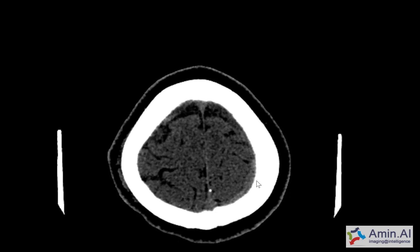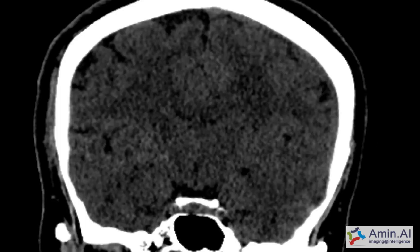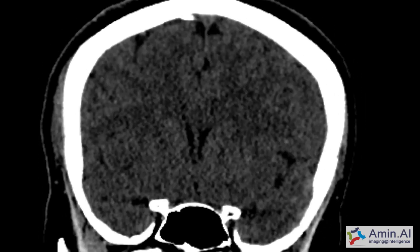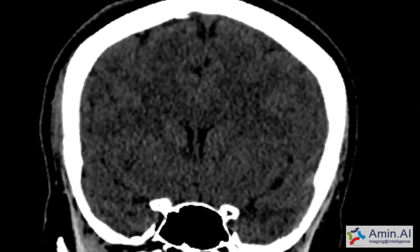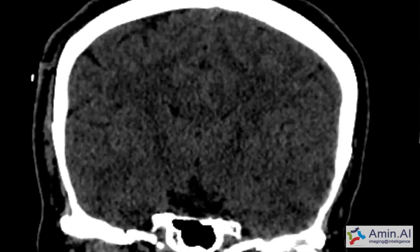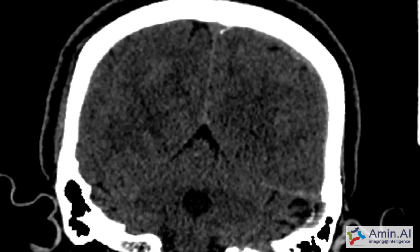Another finding is a linear hyperdense area running all the way here, which is also subtle. On the coronal view, the sulci on the right side are pretty clearly visualized, but on the left side there is a hyperdense area running all the way up to the temporal lobe — that is the site of injury seen on the axial slices as well.